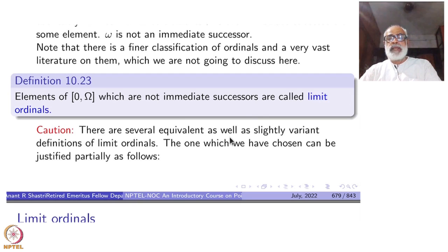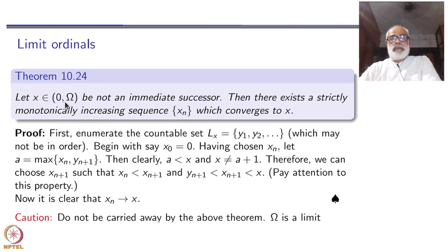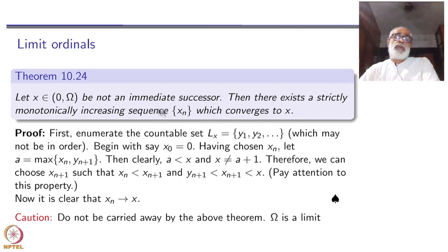There are several equivalent and slightly variant definitions of limit ordinals with different names. Elements of [0, Ω] which are not immediate successors are called limit ordinals. Omega is not an immediate successor; omega plus 1 is its immediate successor, then omega plus 2, and so on. The justification for calling them 'limit ordinals': if an element is not an immediate successor, then there exists a strictly monotonically increasing sequence x_n converging to x.